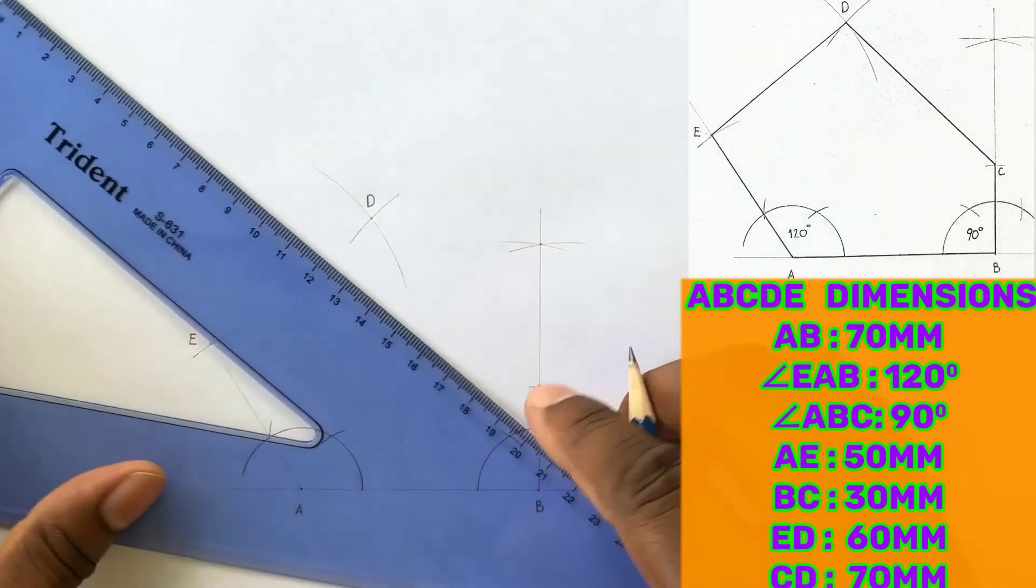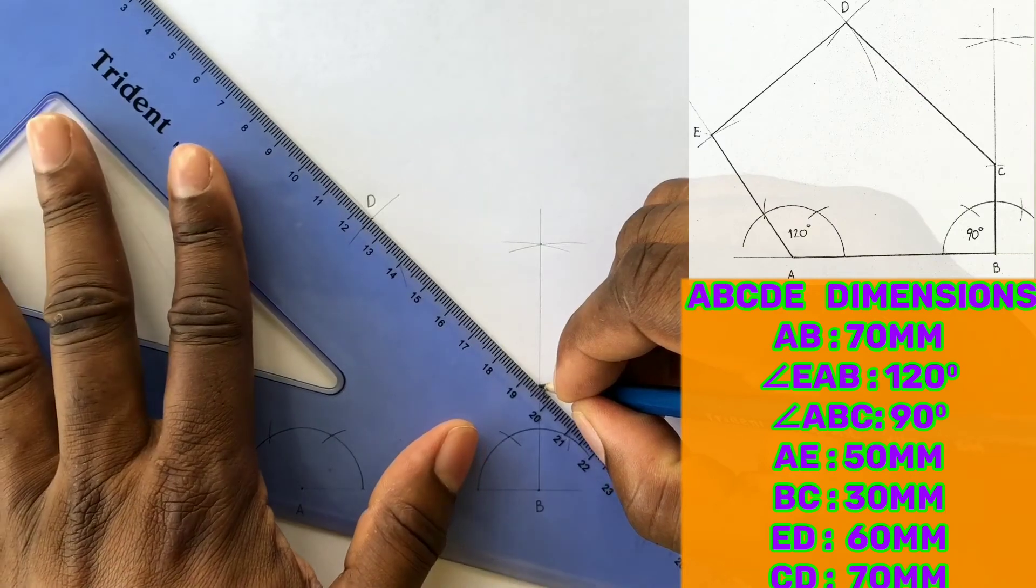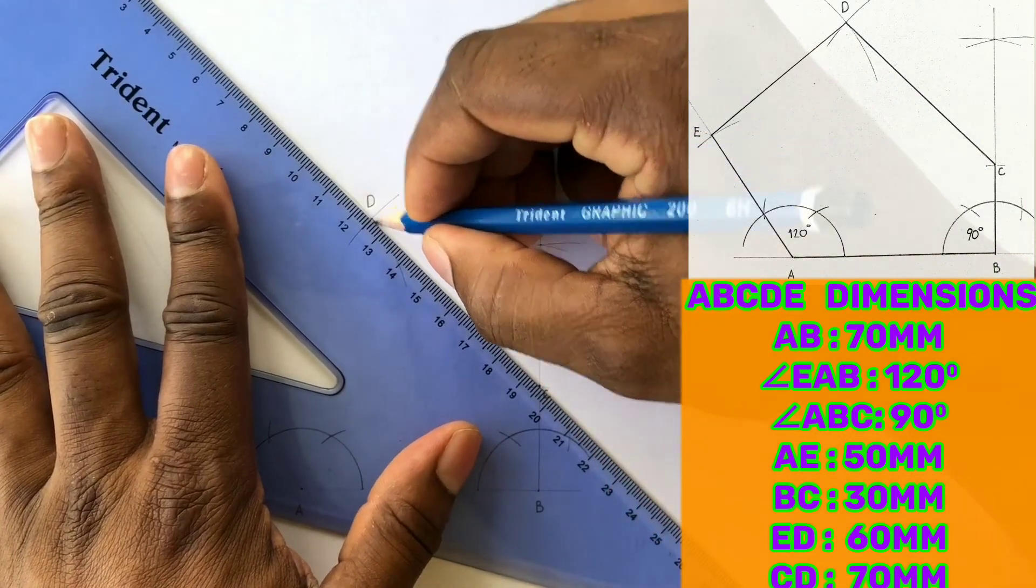Now draw a line from C to D and also from E to D.